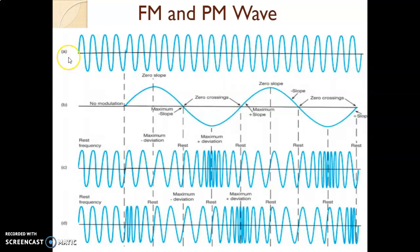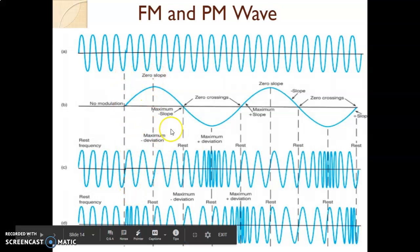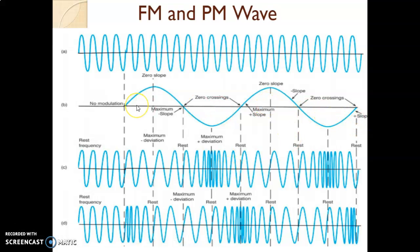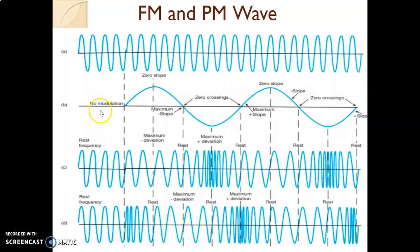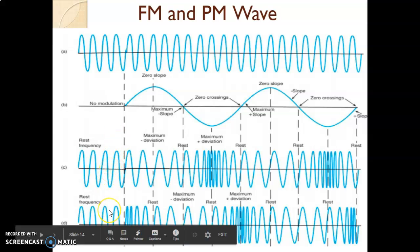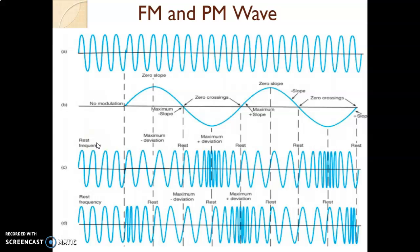In this waveform, waveform A is nothing but the carrier signal, and waveform B is nothing but the modulating signal, which is divided into some angles with the help of dotted lines. When the modulating signal is not present, graph C is the FM output and graph D is the PM output. When no modulating signal is there, for FM we are getting the carrier frequency, and for PM also we are getting the carrier frequency. This frequency is called the rest frequency because no modulating signal is applied.